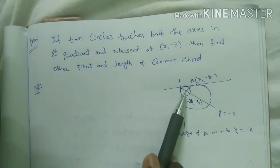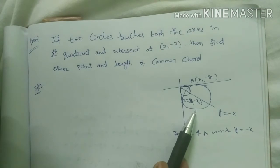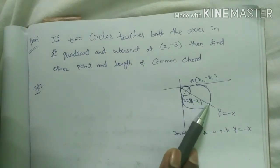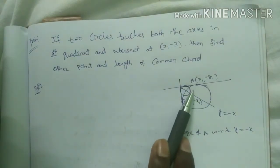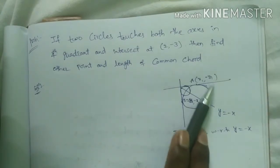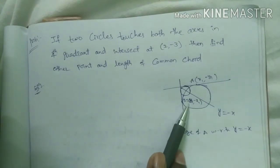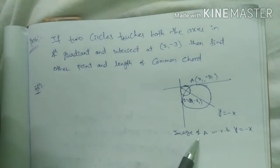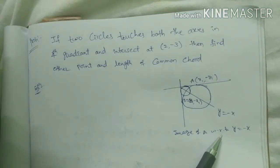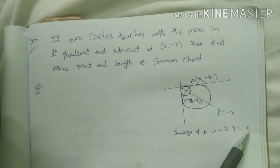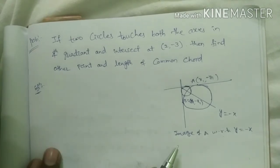See here, this is length of the common chord. This is the length of the common chord. What is that fourth quadrant? A point here (x, -y1), B point here (y, -x1). Image of A with respect to y = -x. Remember that this one.